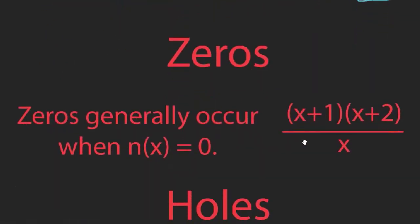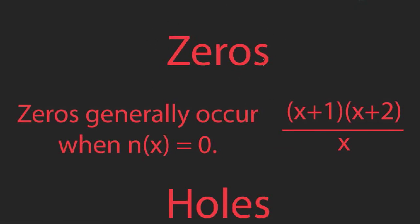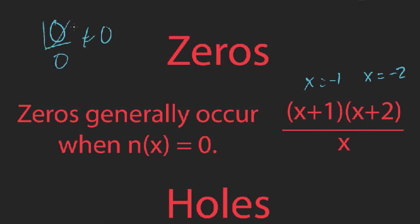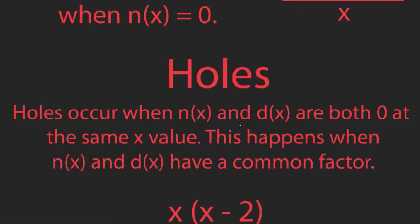The zeros of rational functions occur generally when the numerator is equal to zero — the x values that make the function equal to zero. When the numerator is zero, the entire fraction is zero. So in this example, at x equals negative 1 and x equals negative 2 the numerator will be zero, making the entire fraction zero. The only exception is zero over zero, which is undefined — that's a hole, not a zero.